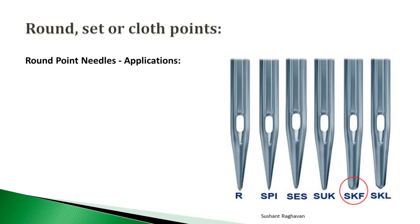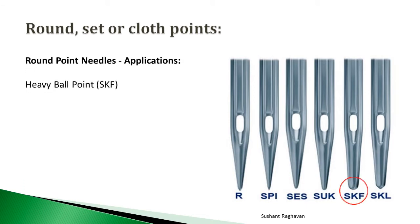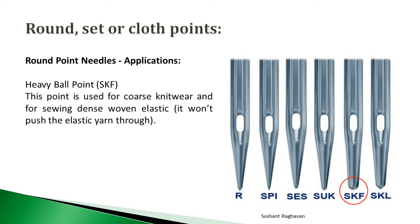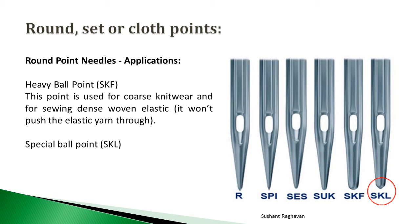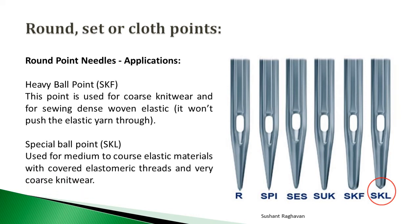Heavy ball point SKF: this point is used for coarse knitwear and for sewing dense woven elastic — it will not push the elastic yarn through. Special ball point SKL: used for medium to coarse elastic materials with covered elastomeric threads and very coarse knitwear.